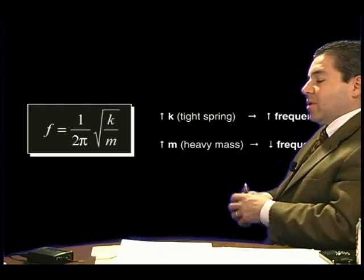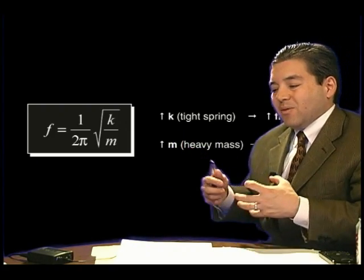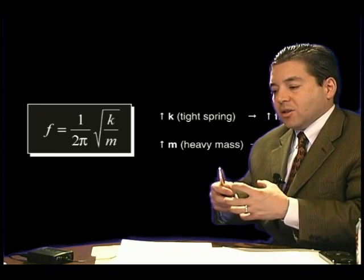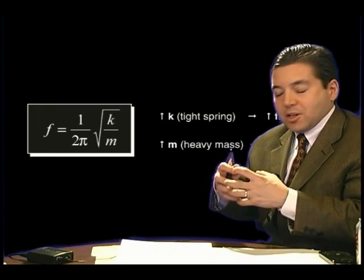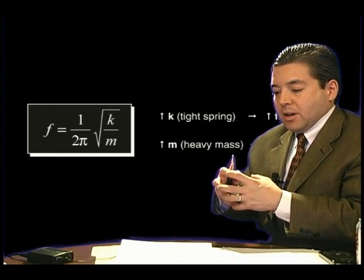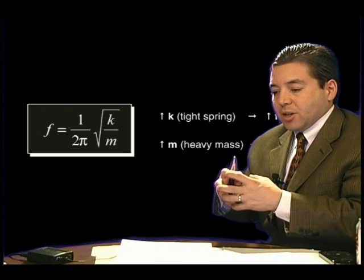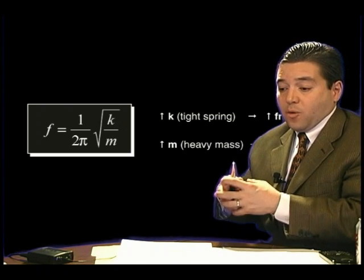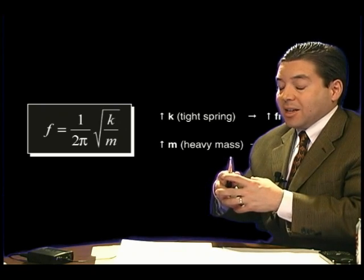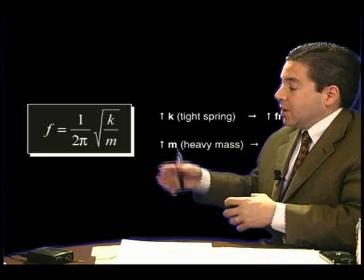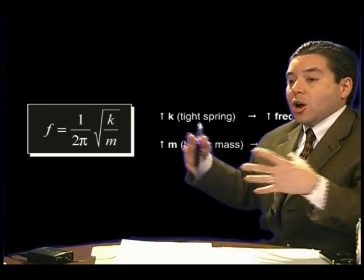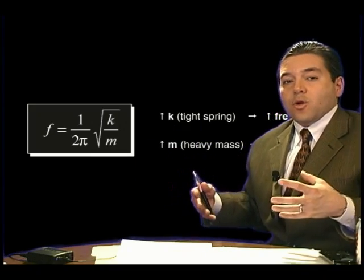You can generalize this phenomena to the concept that very tight objects, strongly bound objects, objects that have a lot of interconnected intermolecular forces, for example, will tend to have high spring constant and tend to oscillate with high frequency. Another corollary is very large objects tend to oscillate with low frequency.